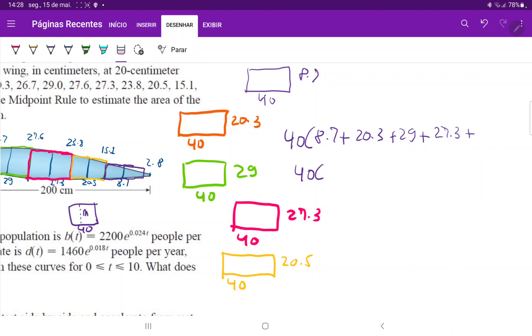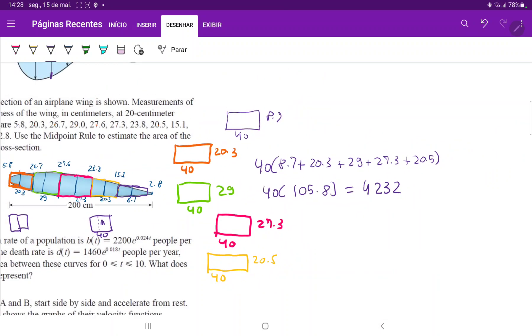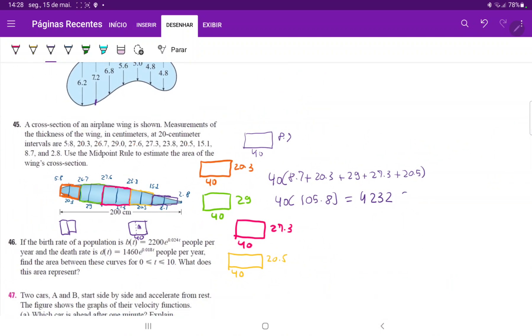And I actually, I want to clean this up just so that you guys can see it a little better because my handwriting really did suck there. 20.3 plus 29 plus 27.3 and plus 20.5. That's better. So that is 40 times 105.8, which is equal to, let's see, times 40, 4,232. And because our units are centimeters, so this is centimeters squared. And that is the area of our cross section of our airplane wing.